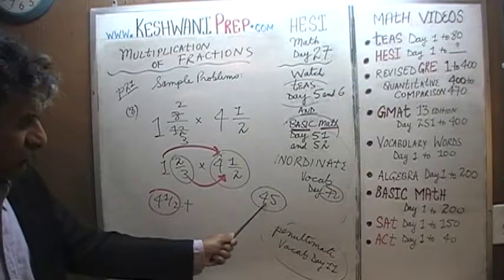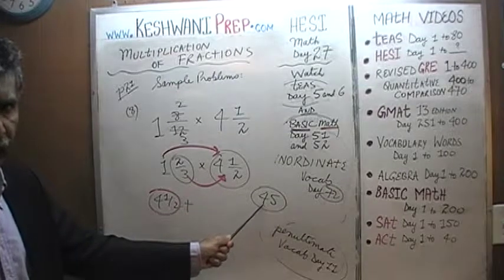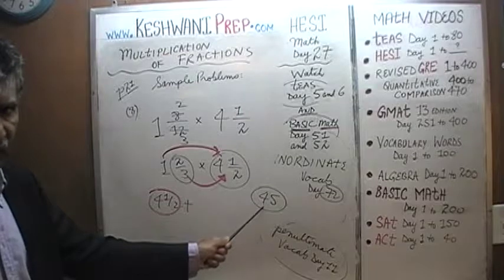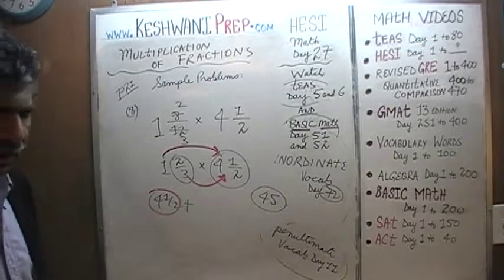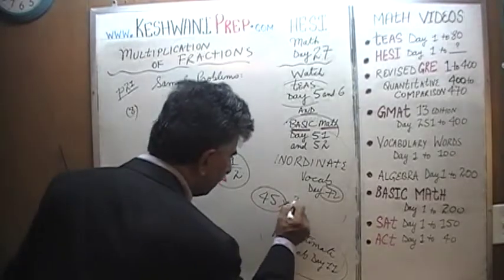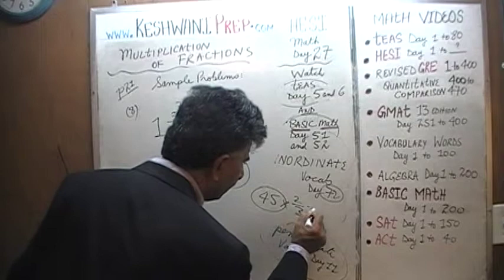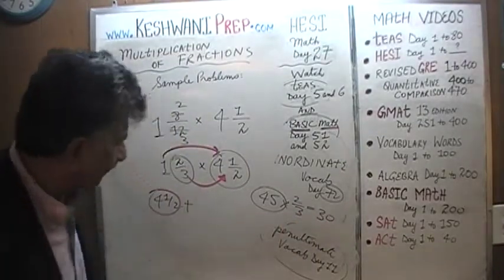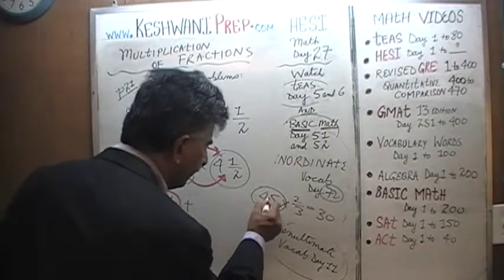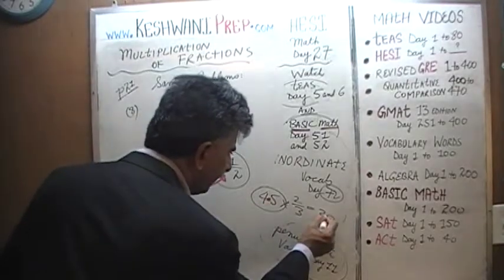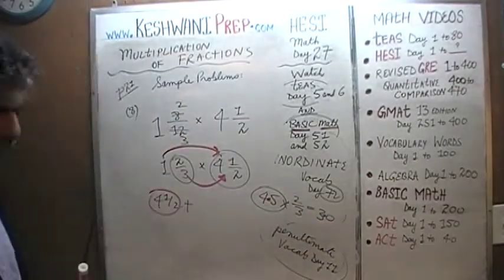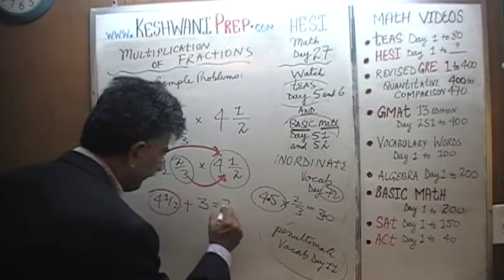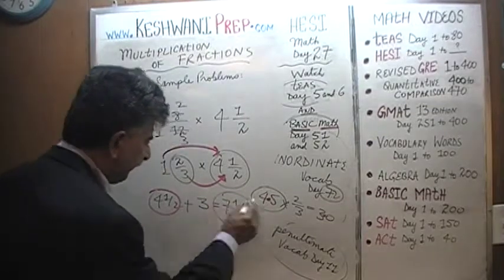Think of 4 and a half as 45. One third of 45 is 15, so 2 thirds of 45 would be 30. But we don't have 45 — we have 4.5. So it's just going to be 3. There you go — we found the answer. 4 and a half plus 3 gives us the answer: 7 and a half.